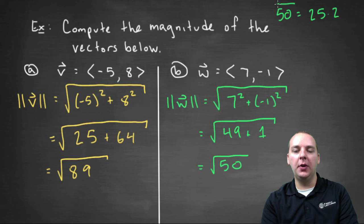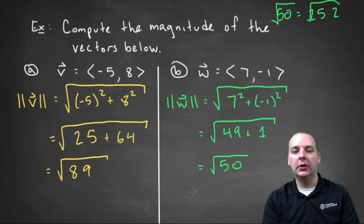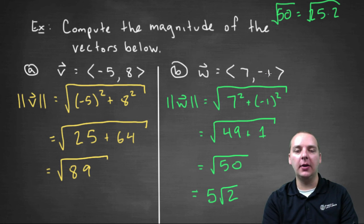And so if you took the square root of fifty, that's the same thing as taking the square root of twenty-five times the square root of two. So the magnitude of w would actually be five root two. Five root two once you simplify that radical.